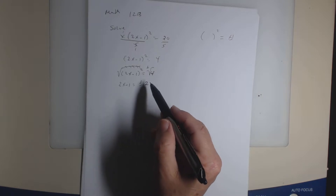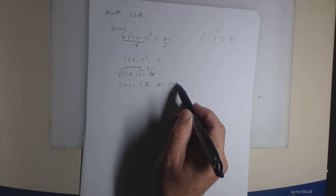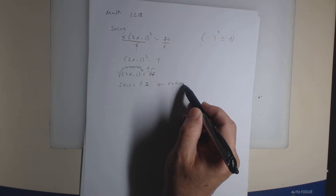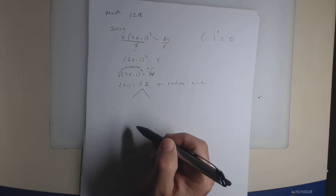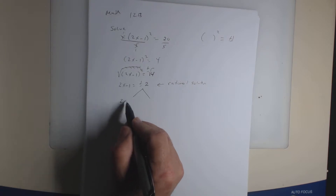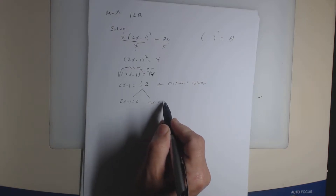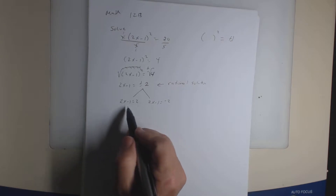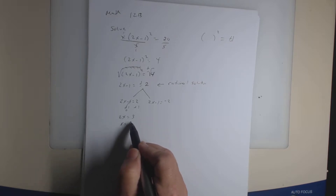Since the square root disappeared, this is now called rational — remember rational versus irrational. So these are going to be rational solutions. Since those are going to be rational solutions, you're going to split it up as two separate equations. So 2x minus 1 has to equal positive 2, and also negative 2. You solve these linear equations by adding 1 to both sides. Combining like terms, I get 2x equal 3, so x equals 3 over 2.